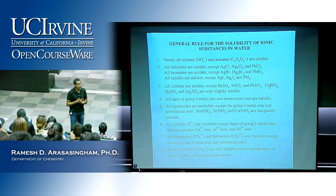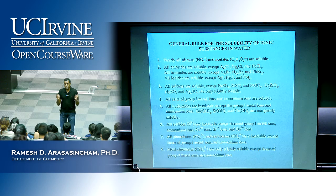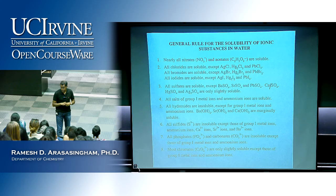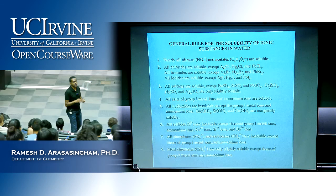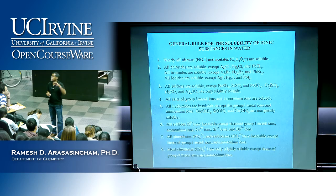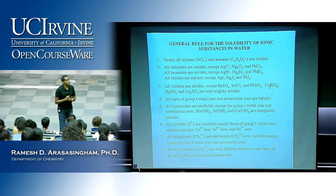There are some very rare instances where two rules might give conflicting information. If that does happen, any rule listed higher has precedence over a rule listed lower. So you can use either Ksp values or solubility rules to figure out whether an ionic salt is soluble or not.